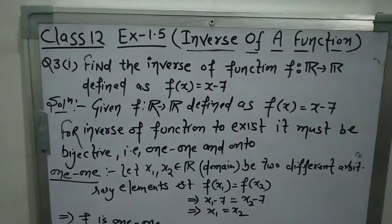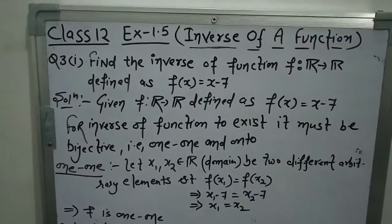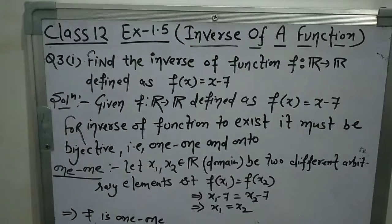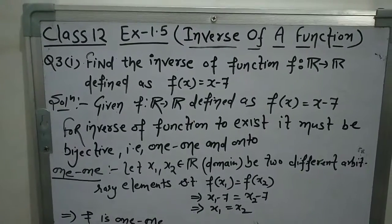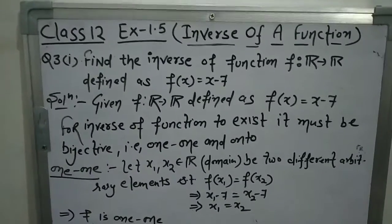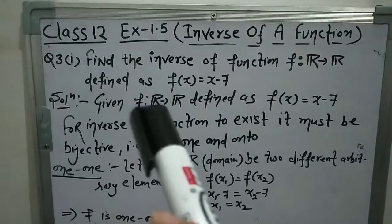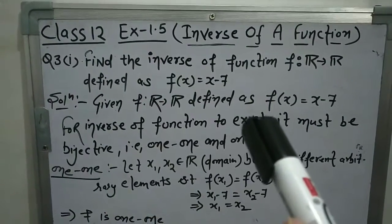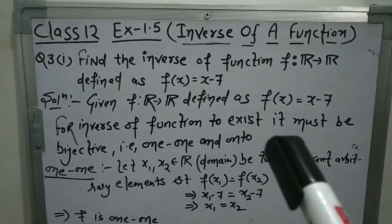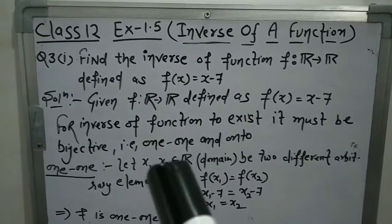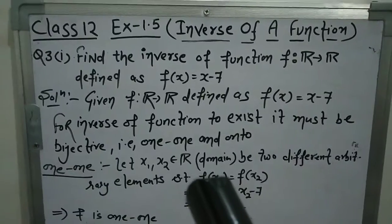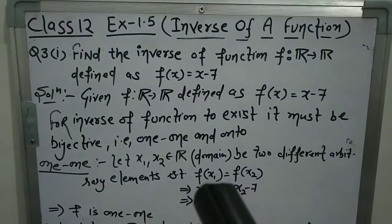So let's begin. We know that for the inverse of any function to exist, that function must be one-one and onto. So first we will check whether the function is one-one and onto or not — that is, whether the inverse of the function exists or not. Given: f from R to R defined as f(x) = x - 7. For inverse of function to exist, it must be bijective, that is one-one and onto.